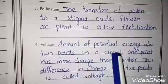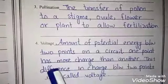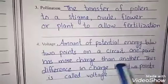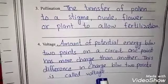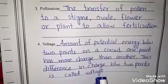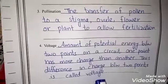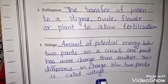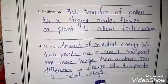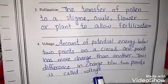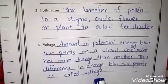Next is voltage: the amount of potential energy between two points on a circuit. This difference in charge between two points is called voltage. For example, if one point is 4 and the second point is 8, the difference between the two points is 4, so 4 is the voltage.